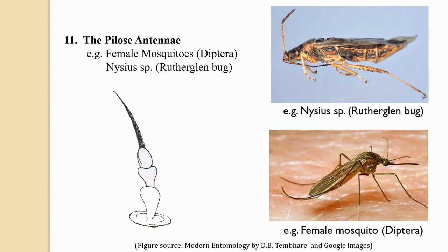The next type is the pilose antennae. In the pilose antennae, the flagellum looks like a shaft with flexible hairs; all the segments are alike, fine and tubular, but without any kind of process on the segments of the flagellum. This kind of antennae is referred to as the pilose antennae, and it is found in female mosquitoes and also in the genus Nepa, which shows the presence of such pilose antennae.